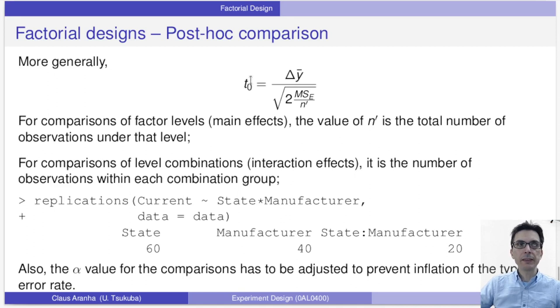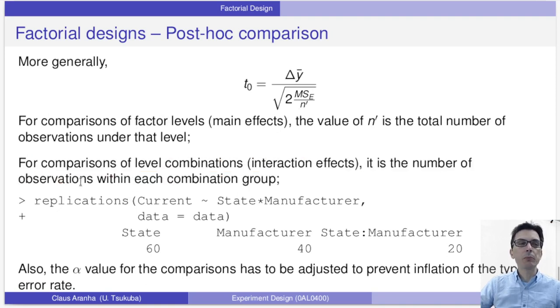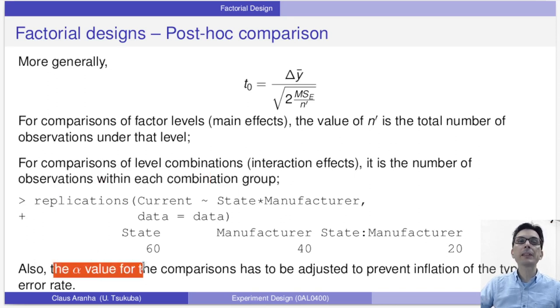More generally, t₀ will be the Δȳ, for the levels that we are interested, divided by the square root of 2 times MSₑ divided by the number of replicates. For comparison of level for interaction effects, this will be the number of observations in each combination group. And the α value has to be adjusted by the number of comparisons that we're making in post hoc analysis. So it's important to determine a priori which post hoc analysis we're doing to be able to do a proper discount of the α value.